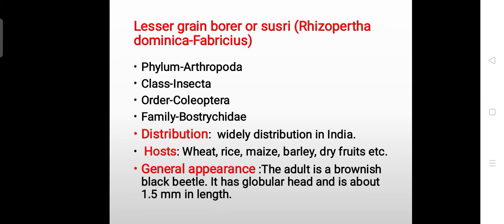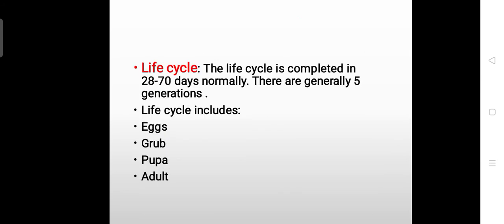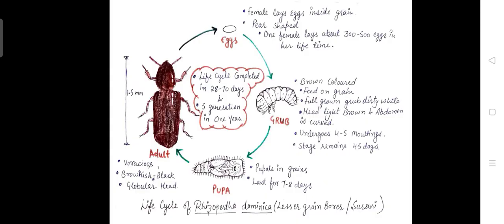Generally, the adult is brownish black in color with a length of 1.5 mm. The complete life cycle takes 28 to 70 days. Normally, there are 5 generations seen in one year. Its life cycle includes egg, grub, pupa, and adult. Here is the diagrammatic representation of the life cycle of the lesser grain borer, starting from the egg.